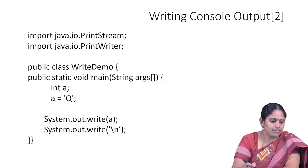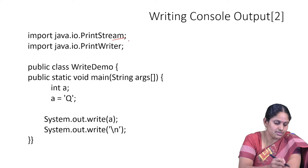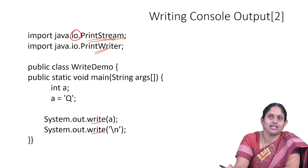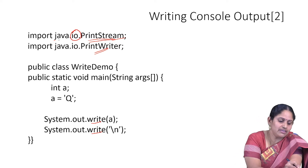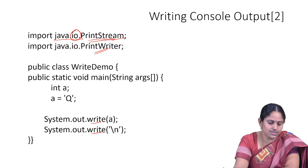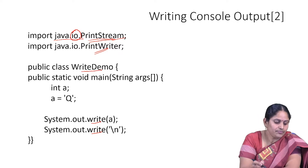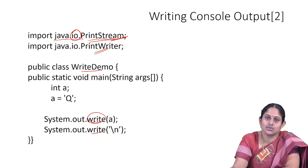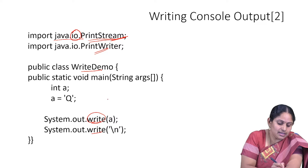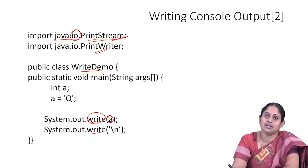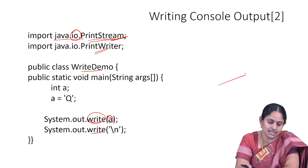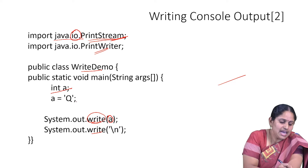Let's look at a small example using PrintStream. Since we are using write methods we have to import the PrintStream class, which is available in the java.io package. In our class WriteDemo, the write method always takes an integer value, but it only writes the last eight bits of the data. Here we have an integer variable 'a' storing the character 'Q'.